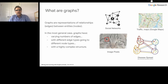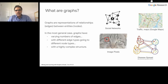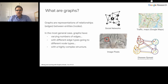Let's start by defining graphs. A graph at its core is a representation of relationships between entities. We refer to these relationships as edges of the graph and the entities as nodes of the graph. In the most general case, graphs can have varying numbers of edges, different types of edges and different node types. We can have very complex structure. As a result, they can model many different things like social networks or traffic networks. We can use them to model the spread of disease or pixels of an image.